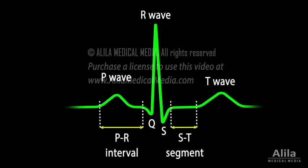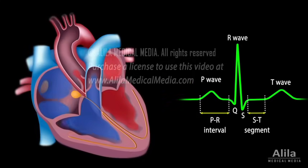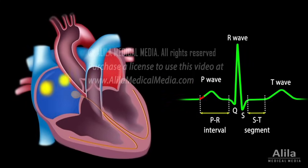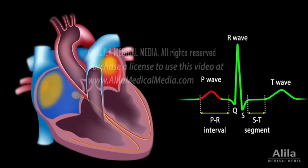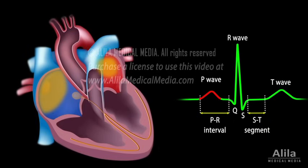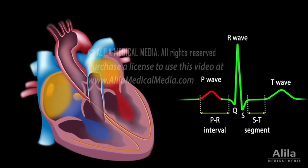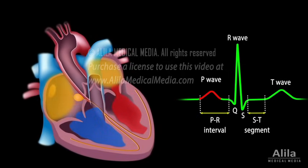Electrical activities of the heart can be recorded in the form of an electrocardiogram, ECG or EKG. An ECG is a composite recording of all the action potentials produced by the nodes and the cells of the heart. Each wave or segment of the ECG corresponds to a certain event of the cardiac electrical cycle. When the SA node fires, electrical signals spread throughout the atria and cause them to depolarize. This is represented by the P wave on the ECG. Atrial contraction, or atrial systole, starts about 100 ms after the P wave begins.